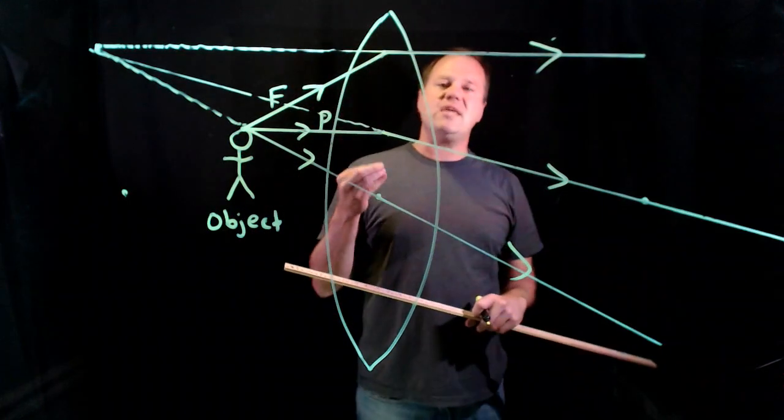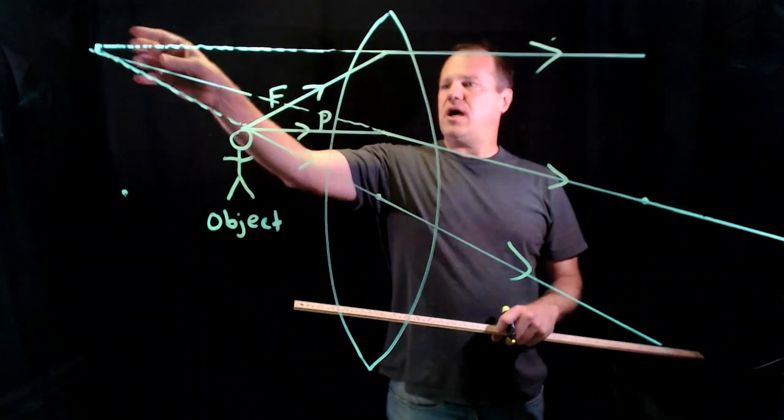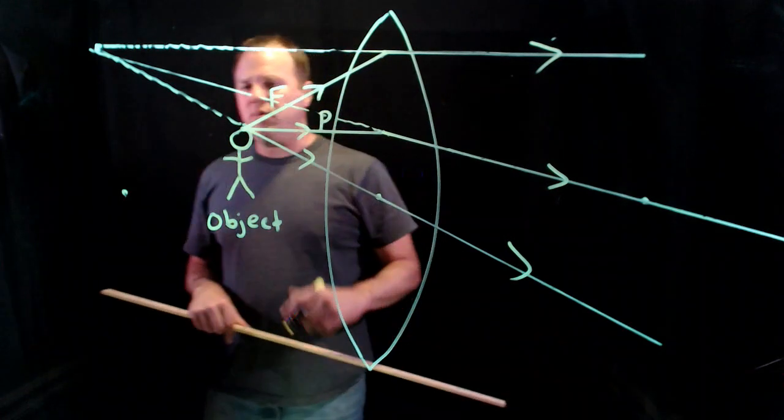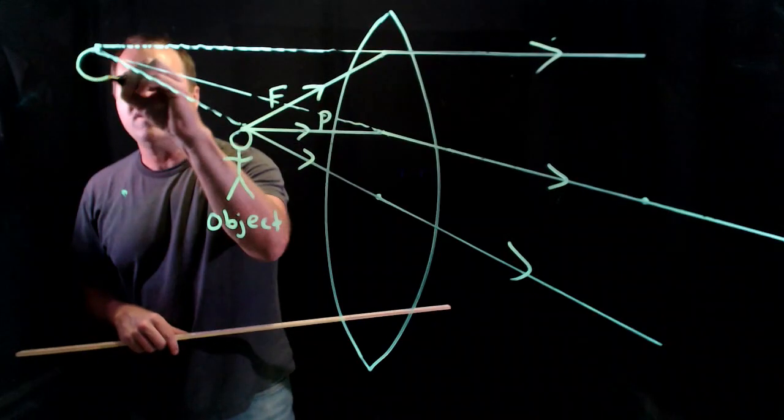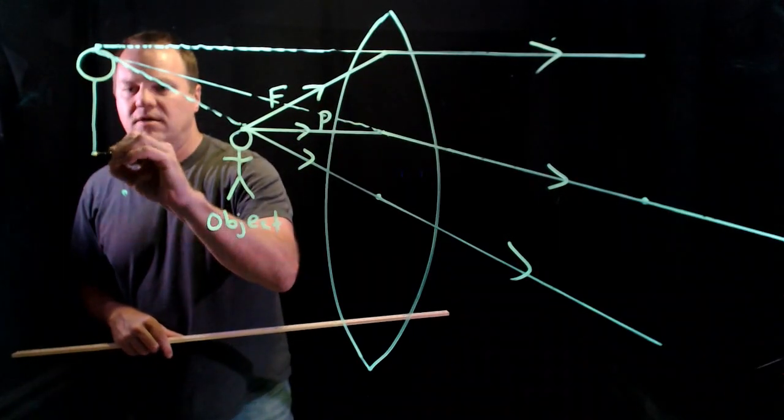So I have located the image for the top of the person's head will be right there. And then extrapolating to the rest of the person's body, I would get something like this.